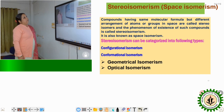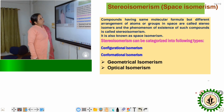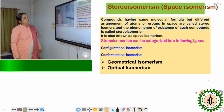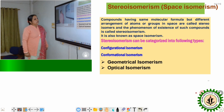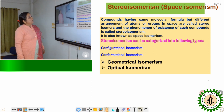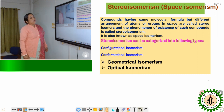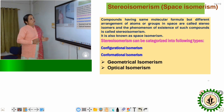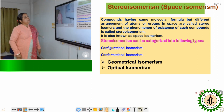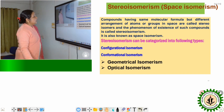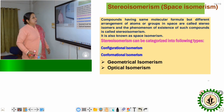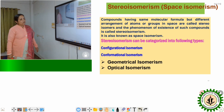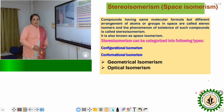Now we discuss the stereoisomer or space isomer. The phenomenon is known as stereoisomerism or space isomerism. It refers to the 3D structure of compounds or molecules. Compounds having the same molecular formula but a different arrangement of atoms or groups in space are called stereoisomers. Stereoisomerism is categorized into two types: one is known as configurational isomers and another is known as conformational isomers.